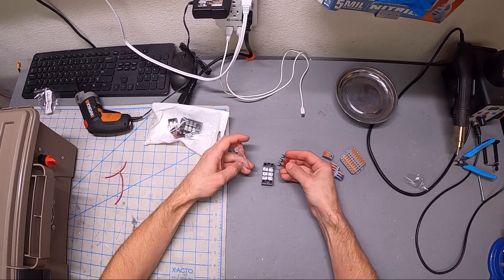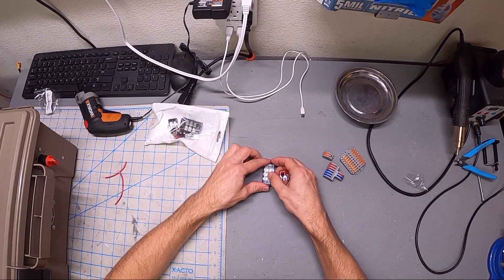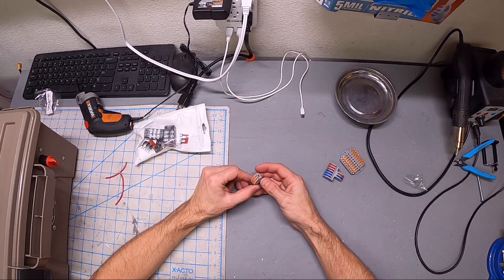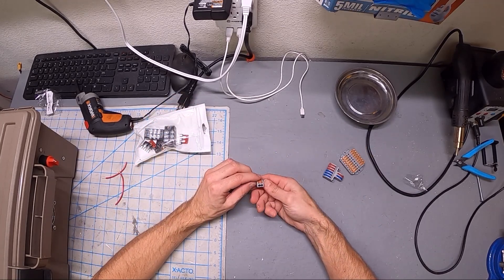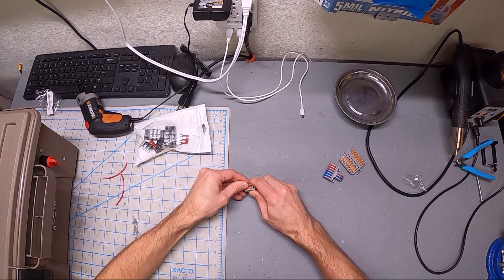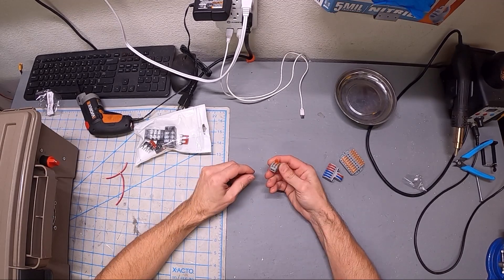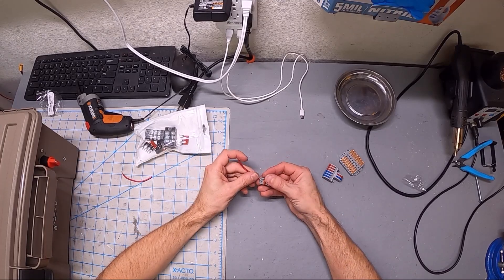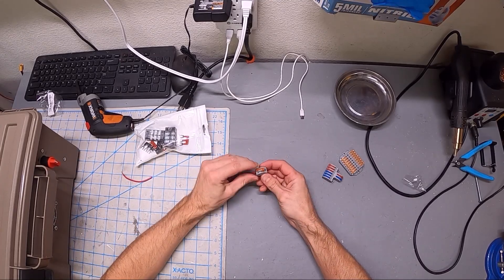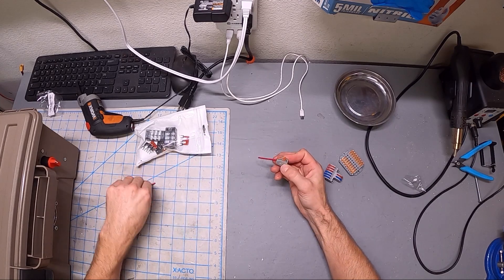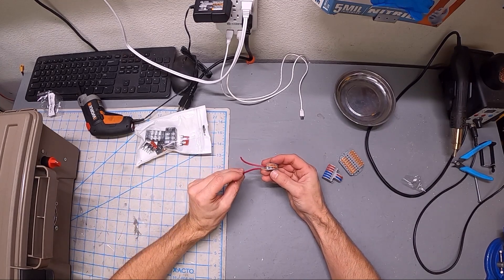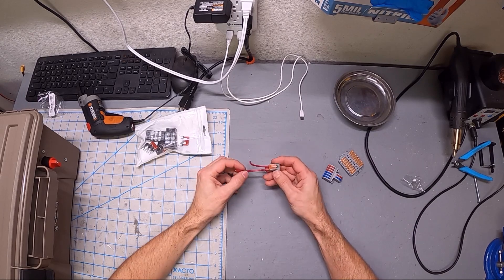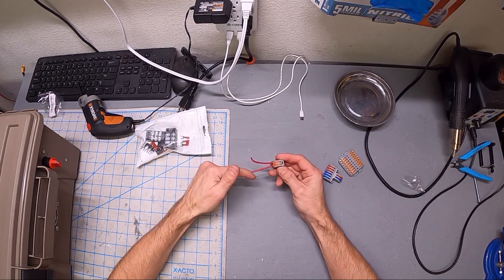Years ago I got turned on to these Wego clips. Big Clive turned me on to these Wego clips and I love these things. You just insert a wire, close the lever, and that wire is now locked in. You insert another wire, close the lever, and the wire is locked in. Now they're electrically joined.